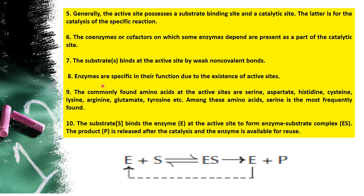The eighth point is: enzymes are specific in function due to the existence of the active sites. The active site is very specific to a particular substrate — one enzyme, one substrate concept. For example, glucose is very specific to glucokinase, but glucose is not specific to hexokinase, and this is because of the existence of the active site. That is why each enzyme is specific to one particular substrate.